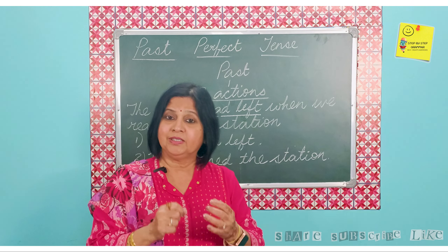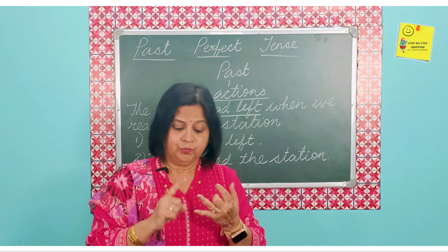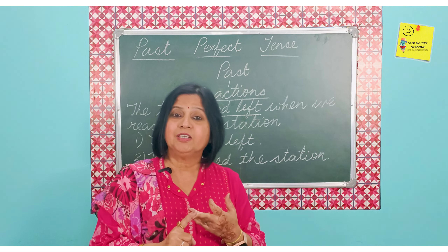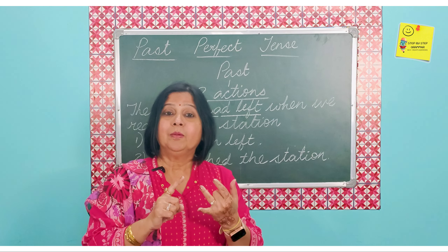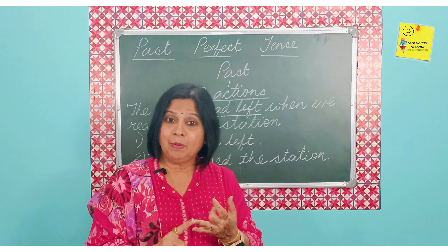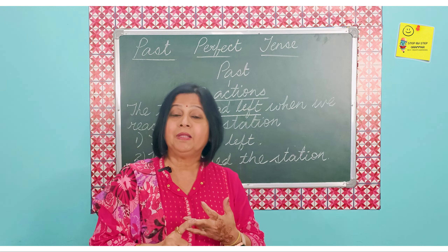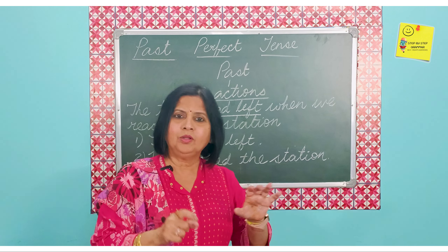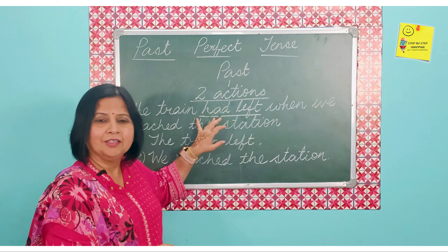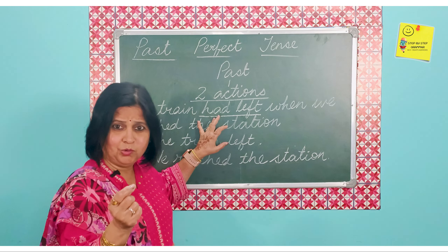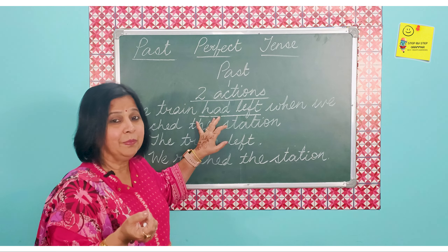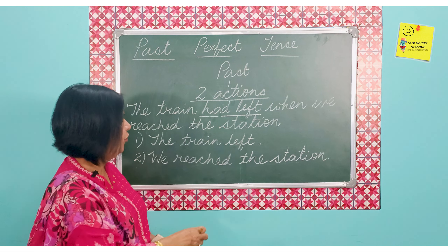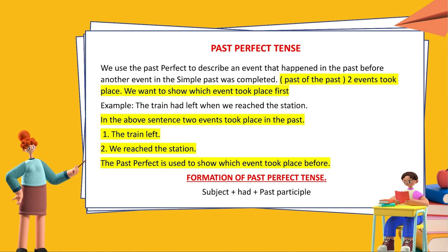When we talk about irregular verbs, for example: go — the past tense is 'went' and the past participle is 'gone.' Similarly, begin — the simple past is 'began' and the past participle is 'begun.' With all these past participles, we just take the auxiliary verb, also called the helping verb: 'had.' Just remember the formation: subject plus 'had' plus the past participle.